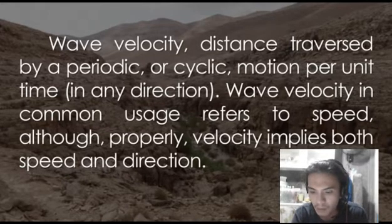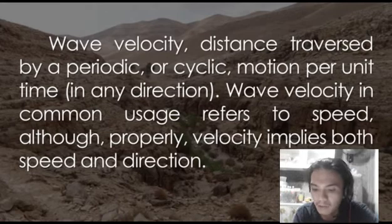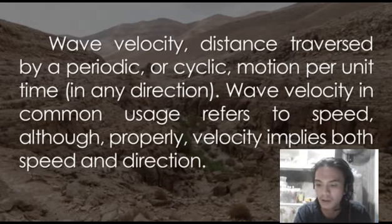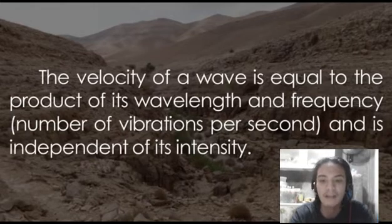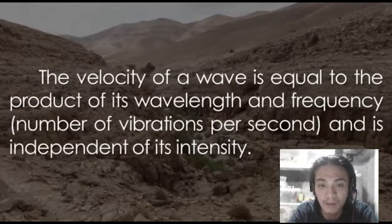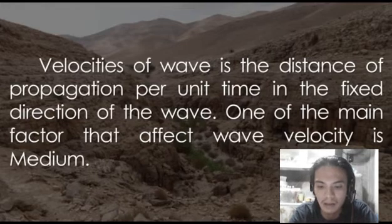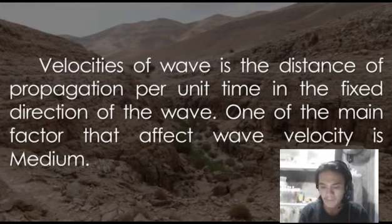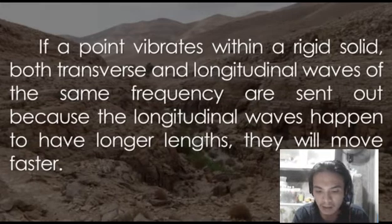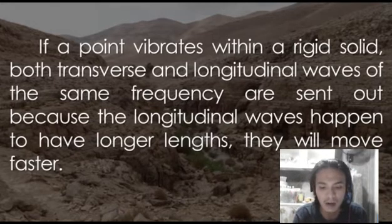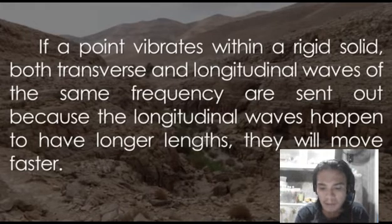Wave velocity in common usage refers to speed, although properly, velocity implies both speed and direction. The velocity of a wave is equal to the product of its wavelength and frequency — the number of vibrations per second — and is independent of its intensity. Velocities of a wave is the distance of propagation per unit time in the fixed direction of the wave. One of the main factors that affect wave velocity is the medium. If a point vibrates within a rigid solid, both transverse and longitudinal waves of the same frequency are sent out, and because longitudinal waves have longer wavelengths, they move faster.